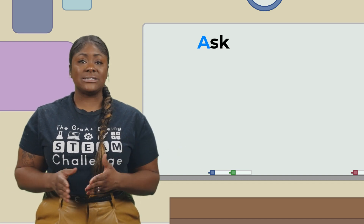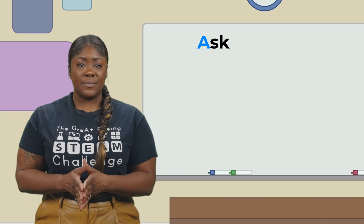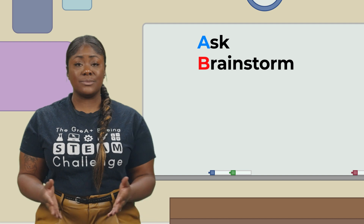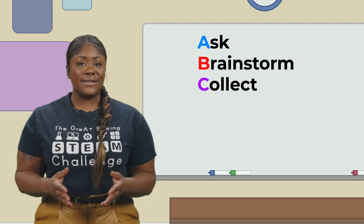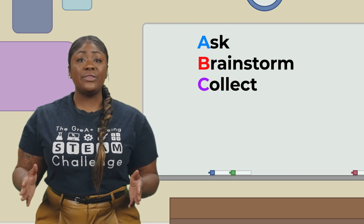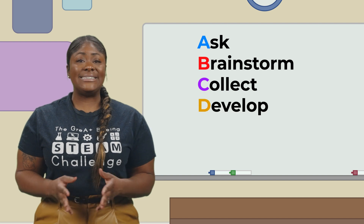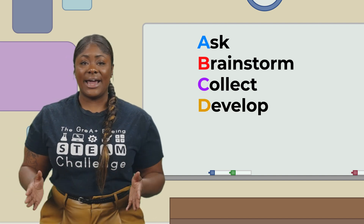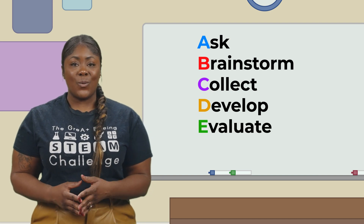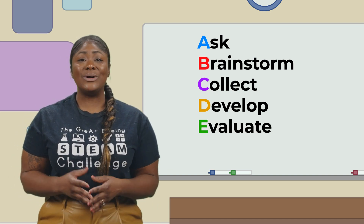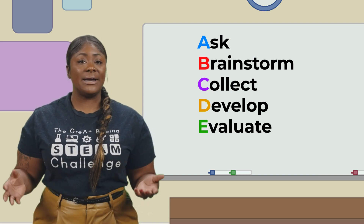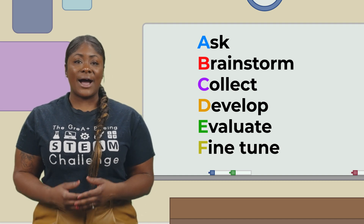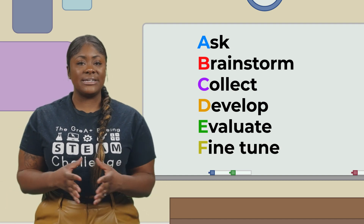A — Ask: what am I trying to create? B — Brainstorm: how can I use my materials to make what I am trying to create? C — Collect: what information have I learned that will help me create? D — Develop: what is the first step I need to make to create? E — Evaluate: what works, what doesn't work, and what can I do to make my design better? And F — Fine-tune: is my design where I want it to be? Are there any changes I need to make?